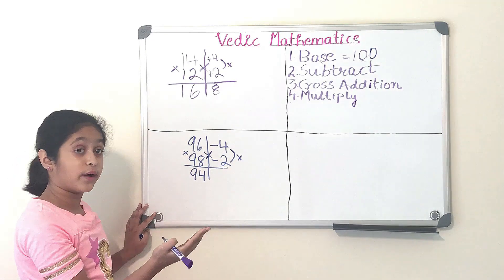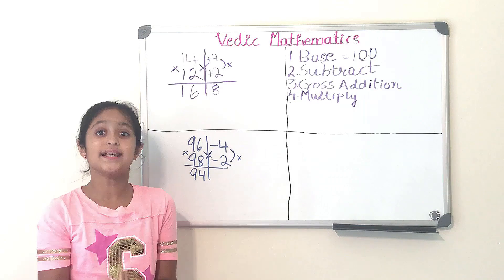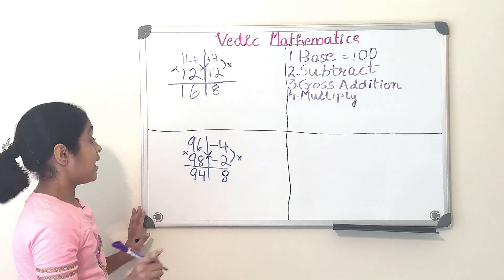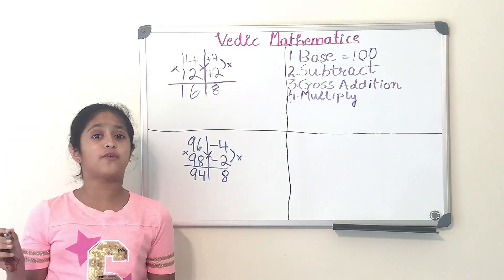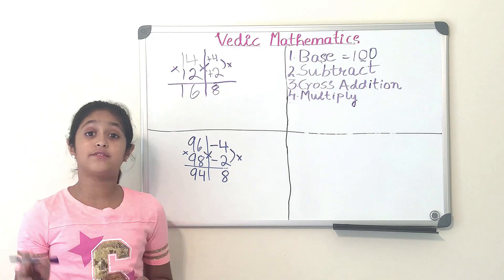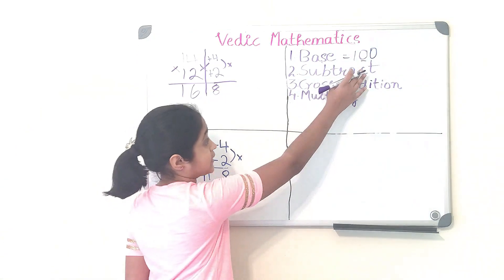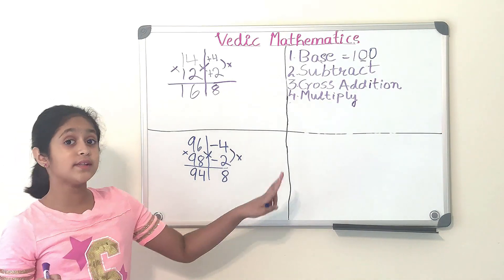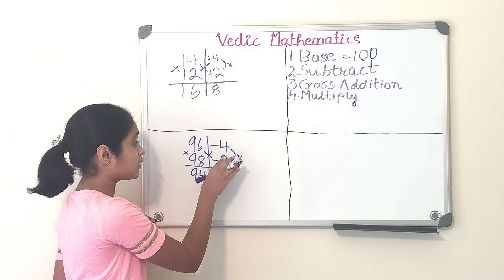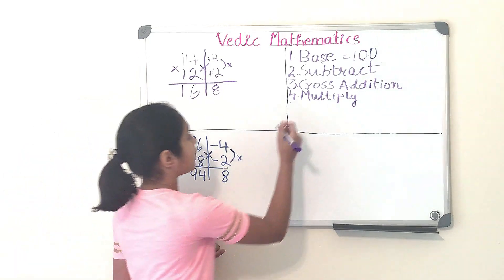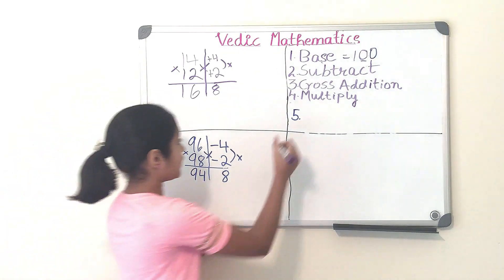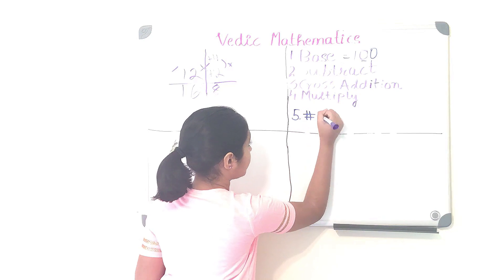Step four: multiply. We multiply minus 4 times minus 2, which is plus 8. But wait — do you think 948 is the right answer? Actually, it's not. We always have to pay attention to how many zeros are in the base. Since the base is 100, there are two zeros, so there must be two digits after the cross-addition result. This is the fifth step: always pay attention to the number of zeros.